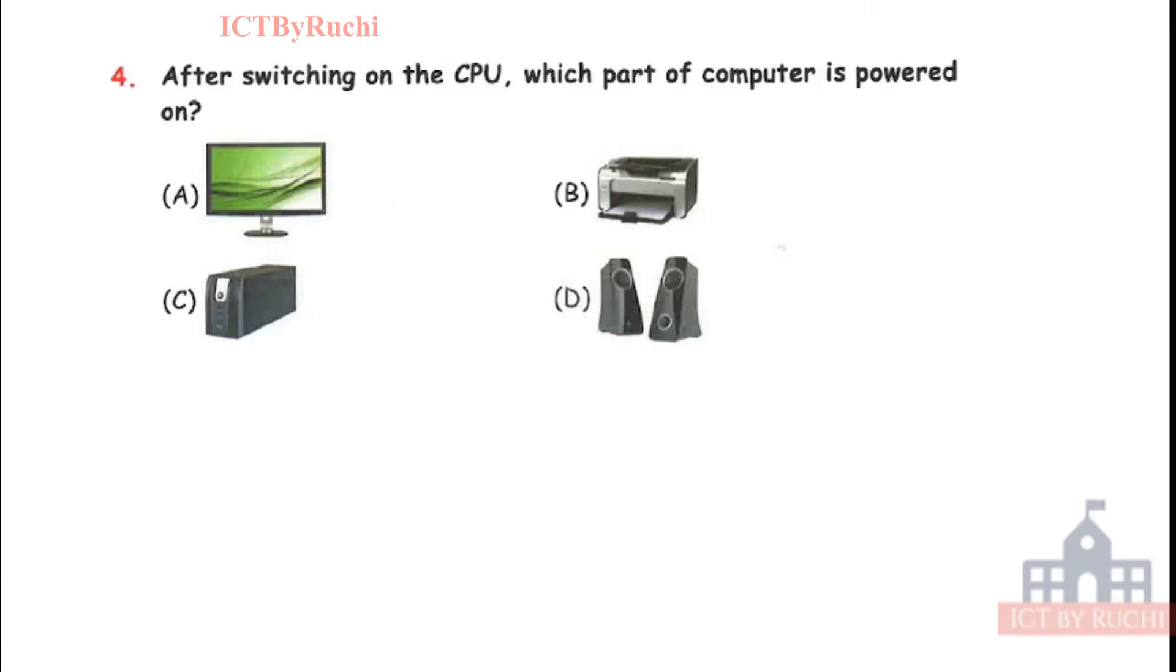Next question. After switching on the CPU, which part of computer is powered on? A. Monitor, B. Printer, C. Speaker, D. Again a speaker. So tell me which part is on? If we switch on the CPU, it means the part which is attached directly to the CPU. Answer is A. Because you always know that CPU must always be connected to a monitor. So monitor is switched on by pressing the power button available on it.